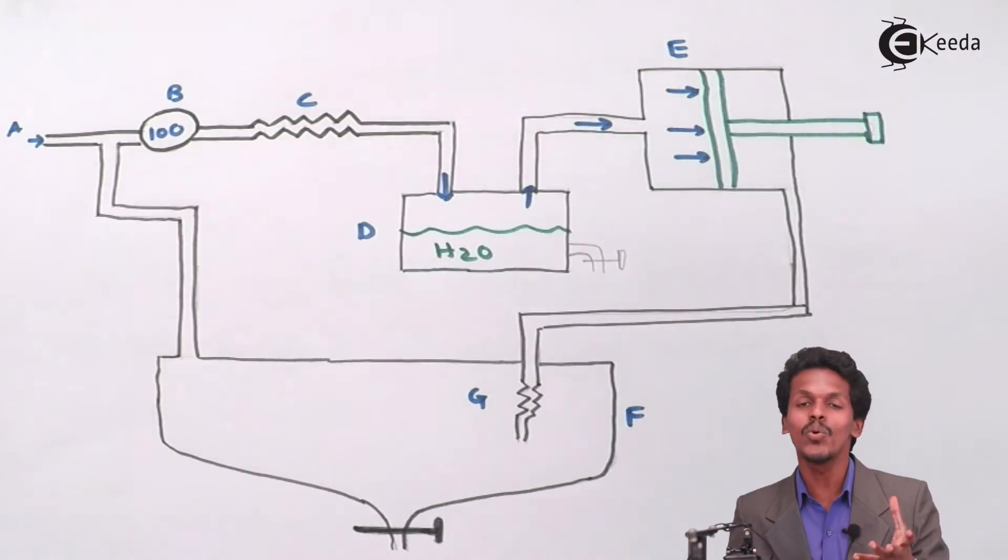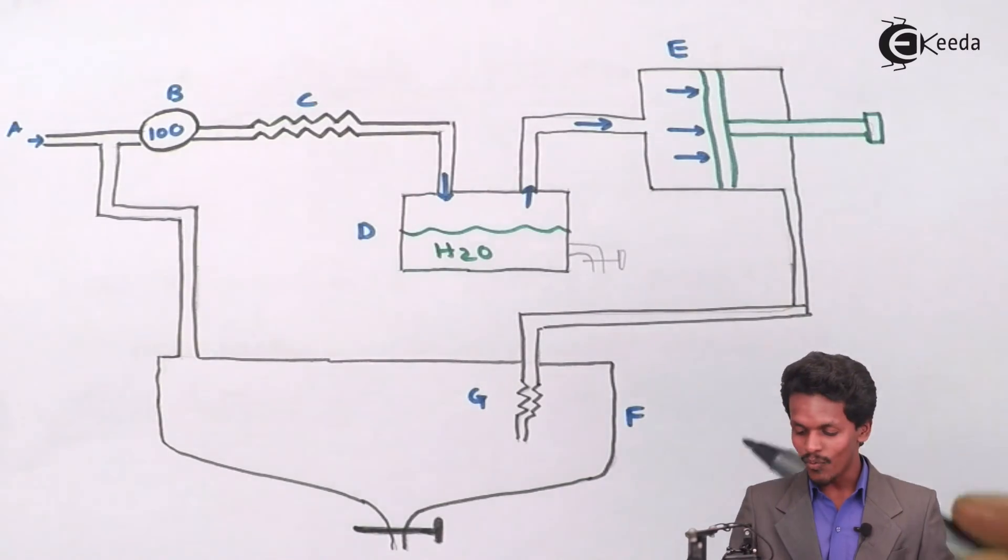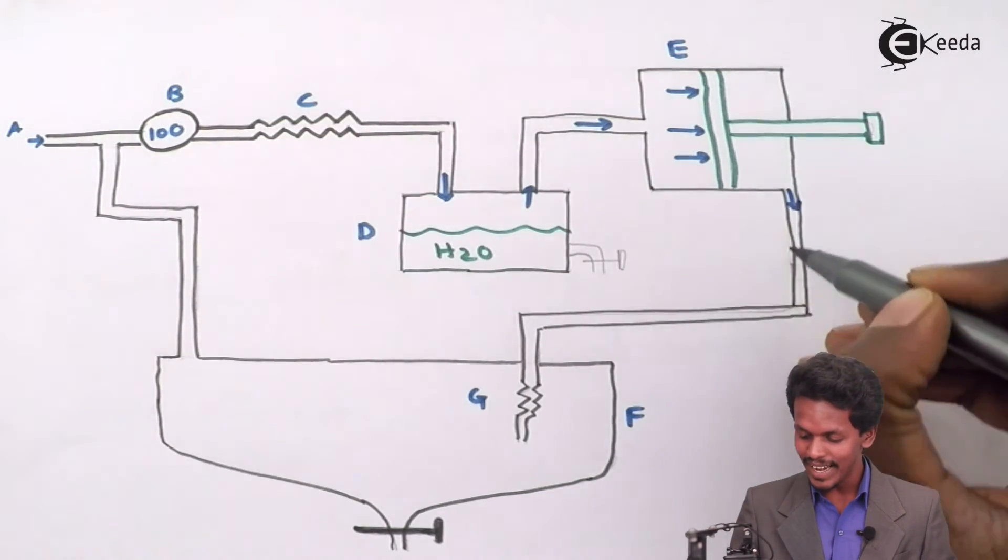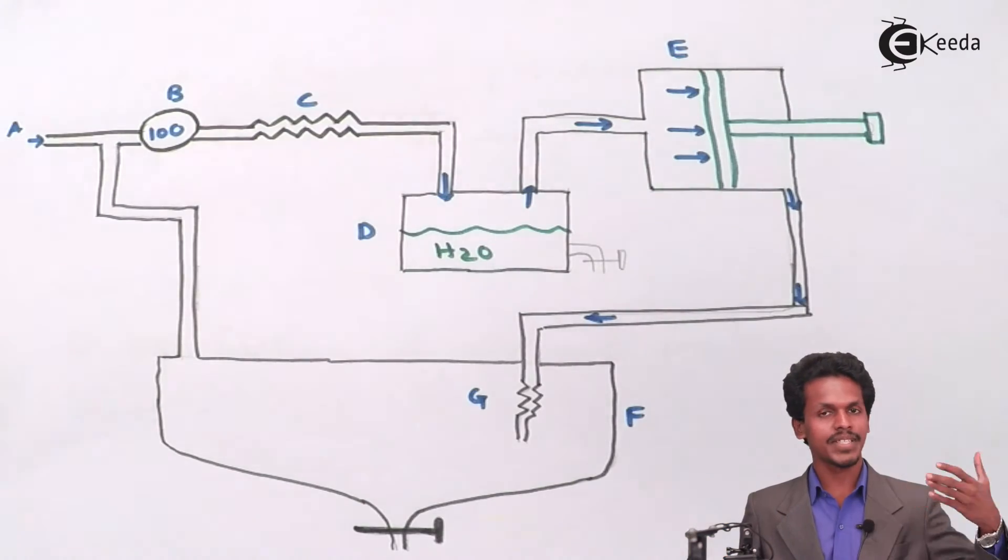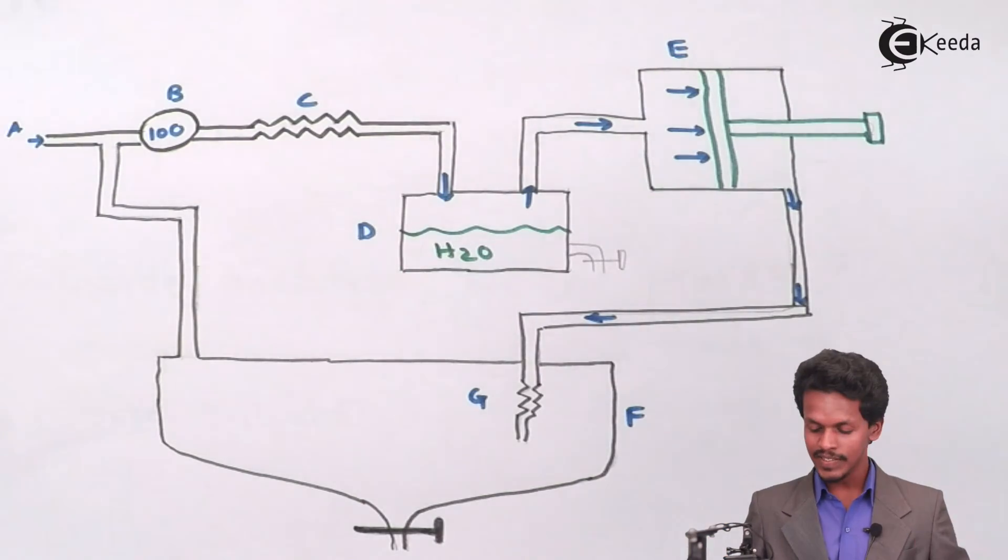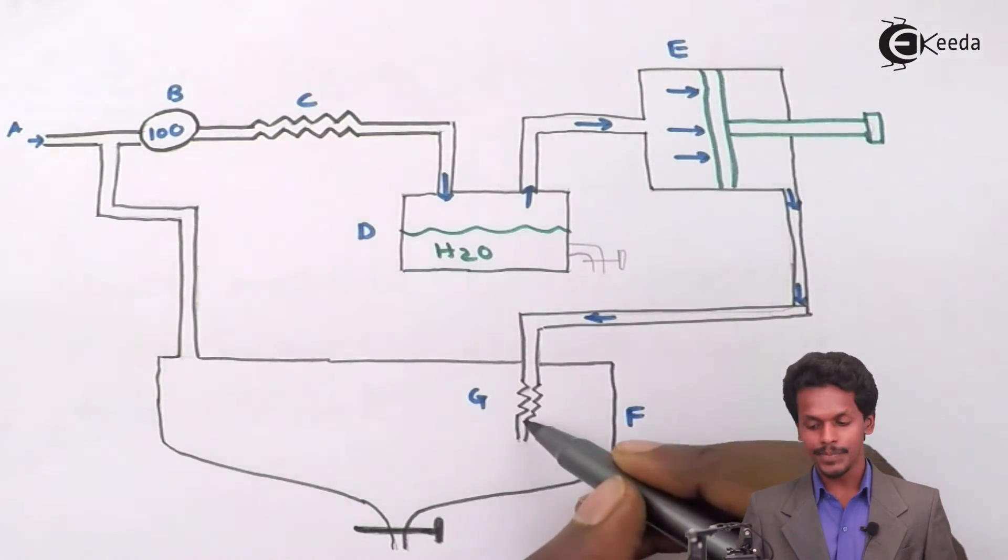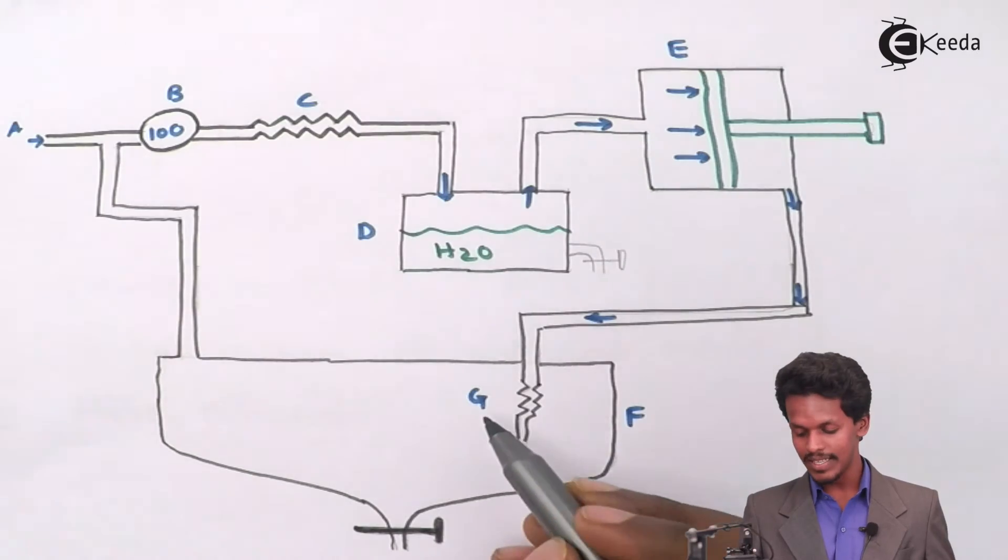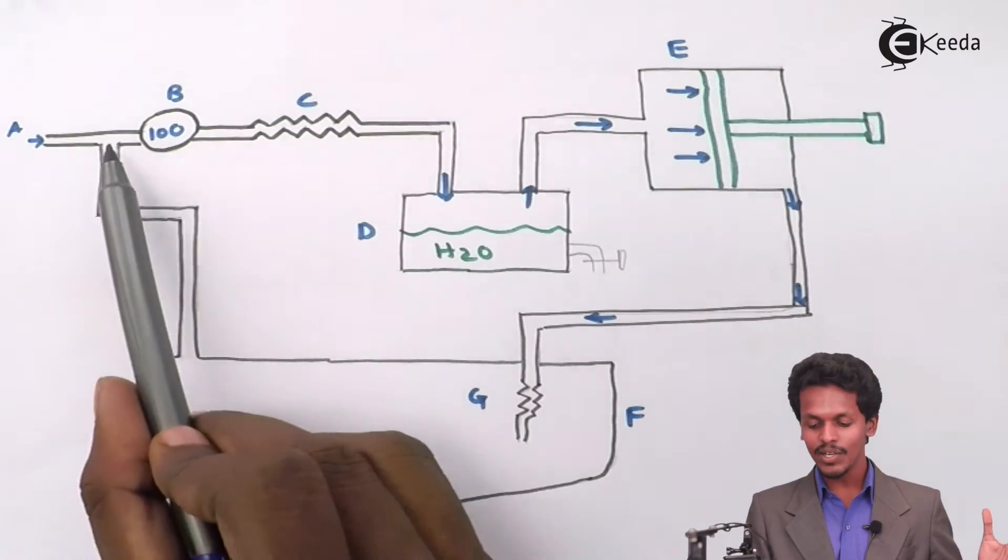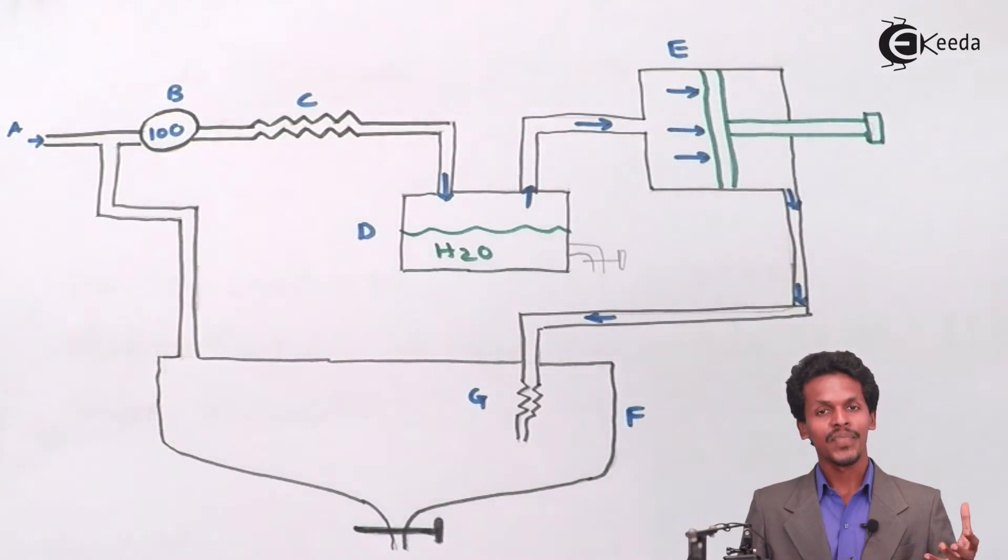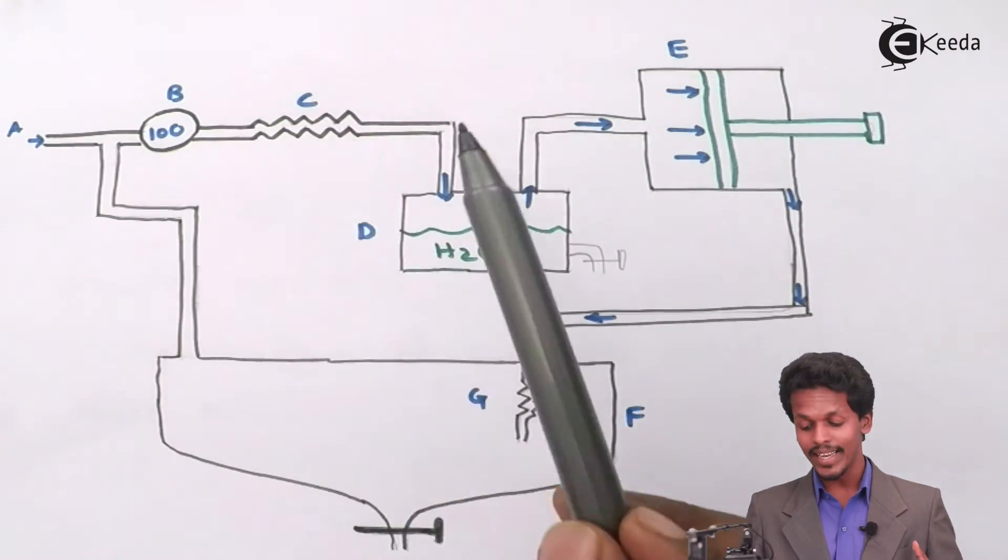That cool air will again enter here and it will be the same setup like in Linde's process. So it will enter through this small hole. I have named this as G, but G is itself again a coil. So we are passing it again through a coil. So basically initially here the gas was being passed through the coil and it was being liquefied.